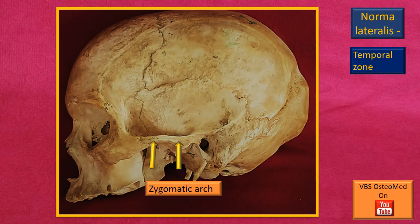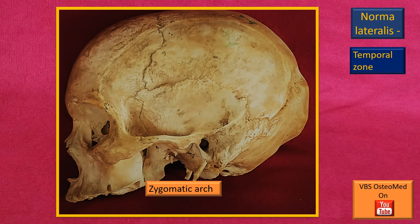Another important feature of this view, the temporal zone norma lateralis, is the zygomatic arch. This arch is a bridge of bone between the zygomatic and the temporal bone. We will see a little detail in the next few slides.